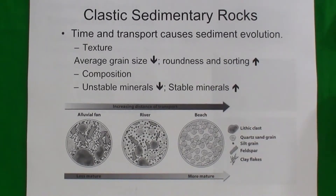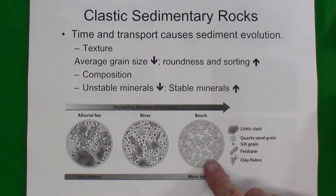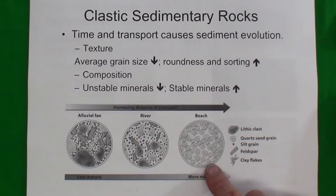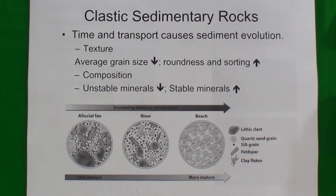In general, increased time and distance of transport causes sediment to become more mature. With increased transport, sediments become smaller in size, more rounded, and well sorted. Additionally, minerals that are chemically unstable at the surface — such as feldspars and some iron-rich minerals — will chemically alter into more stable minerals like clays and iron oxides. Quartz, which is a very stable mineral, will remain quartz and just become smaller and more rounded.